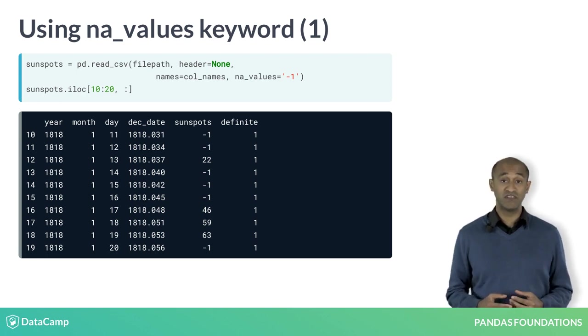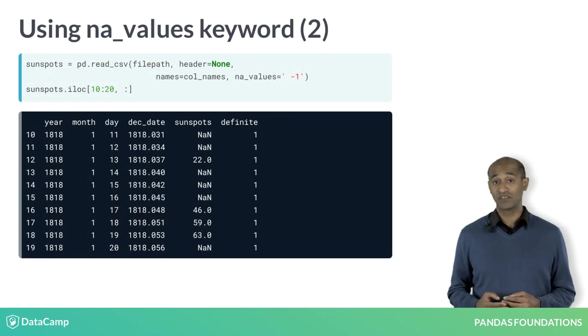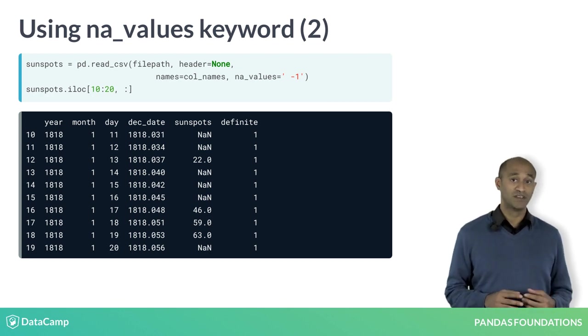Looking at the original CSV file reveals the problem. There are space characters preceding minus 1s throughout column 4. Thus, we use NA values equals quote space minus 1 quote and it works.